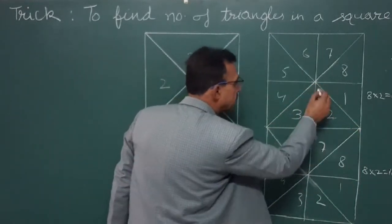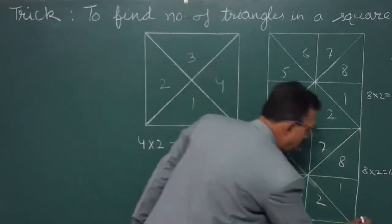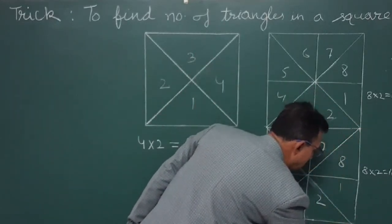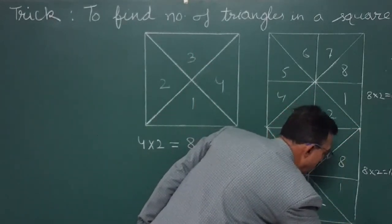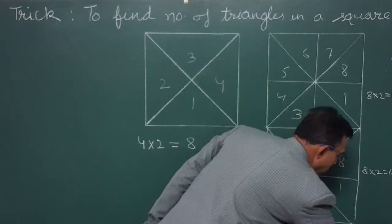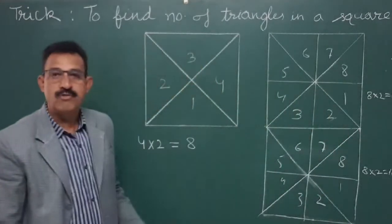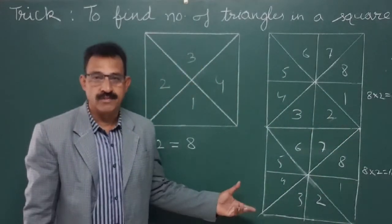We have one triangle, we have extra one. So there are 34 triangles in total in the given figure.